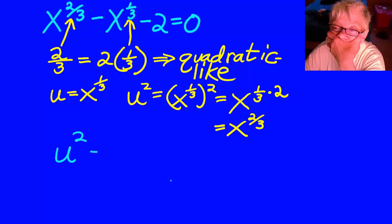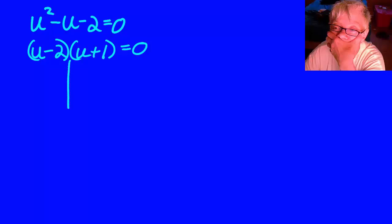We can now substitute this in the original. u squared minus u minus 2 equals 0 will be much easier to solve. And it's factorable. You don't have to factor. You can use the quadratic formula, but I would rather factor when I can. So this factors into u minus 2 times u plus 1. We set each factor equal to 0. And we solve each resulting little equation. u equals 2, u equals negative 1.